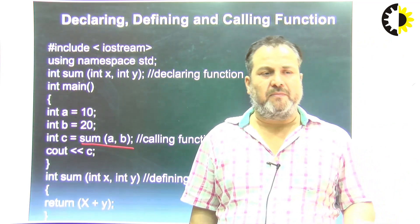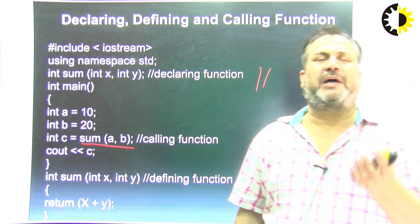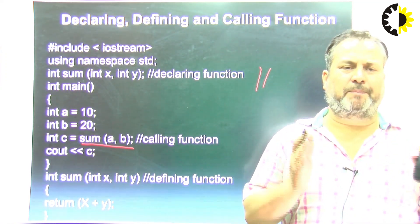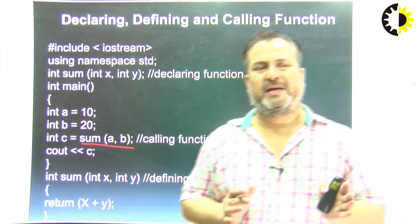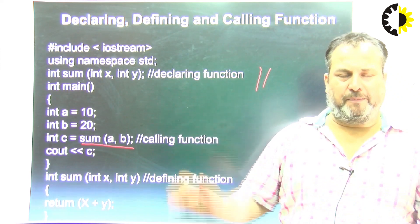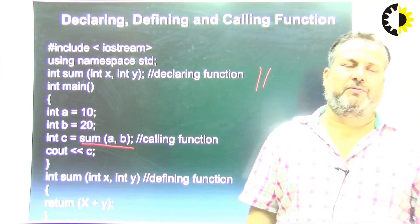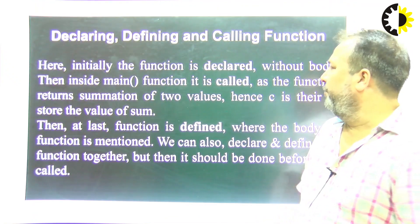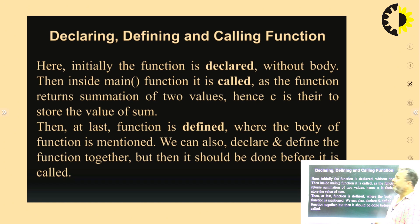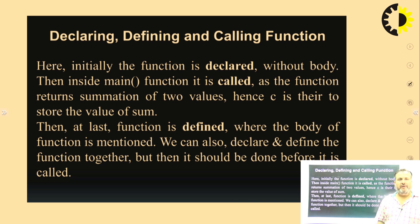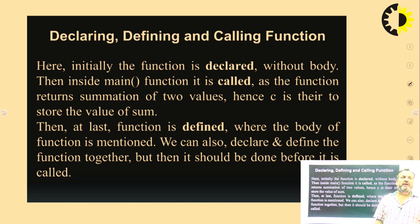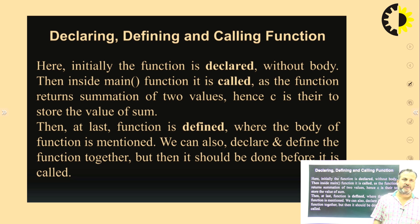By use of the function, if we want to use some particular code at many different places, either we would write that much code in those places or we simply call the function — this avoids rewriting. That is called declaring, defining, and calling the function. Declaring means prototype declaration, defining means its definition with return type, name, and arguments, and calling is how the function gets invoked.